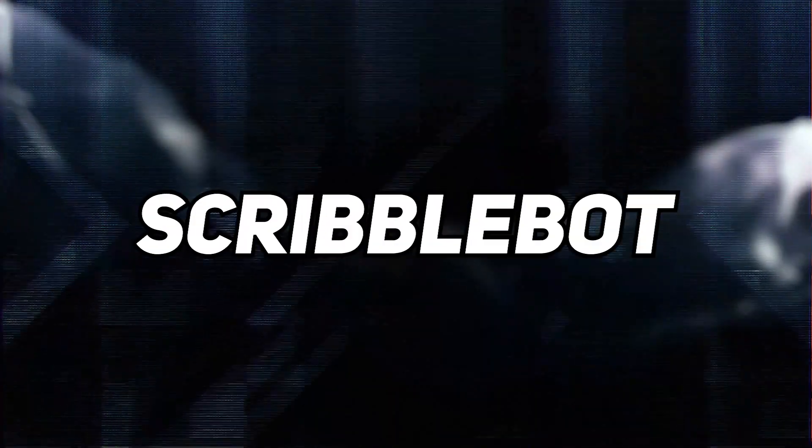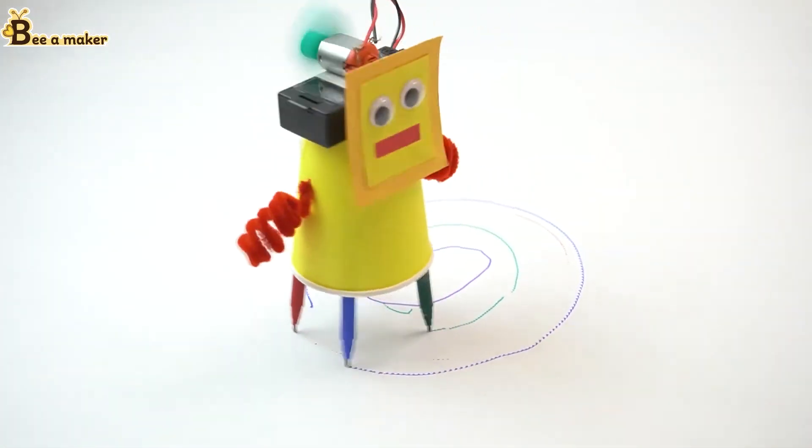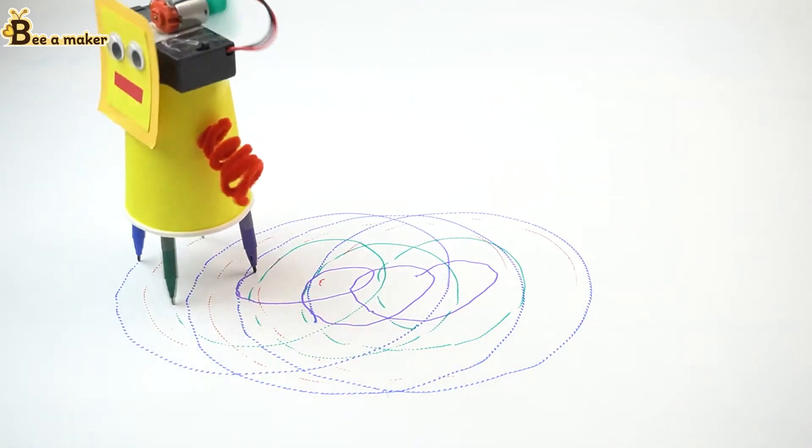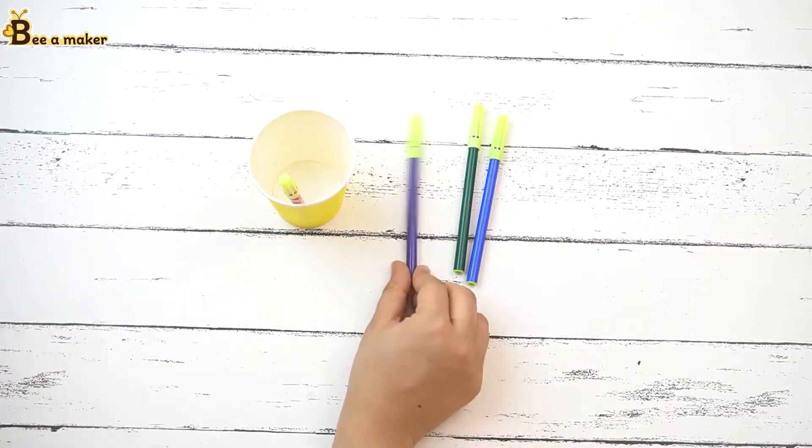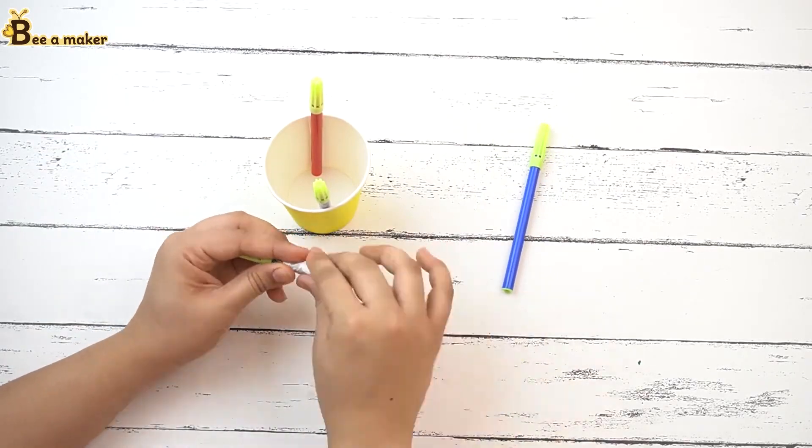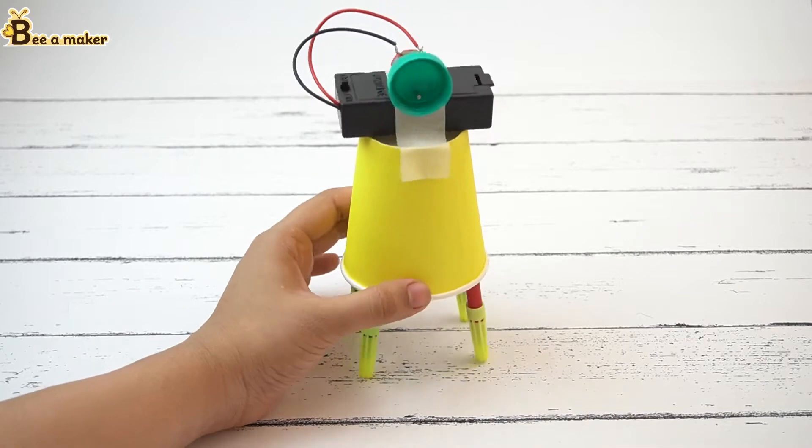Number 10: Scribble Bot. A Scribble Bot is a robot that can make random scribbles on paper. You can make one by attaching a battery, a motor and an offset weight, such as a bolt or a nut, to a plastic container or a cardboard box. You can also add some pens or pencils to the sides or corners of the container or box.